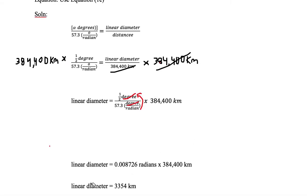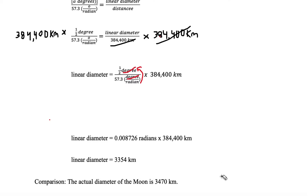Our final answer for the linear diameter is 3354 kilometers. Now let's compare that with the actual diameter of the Moon measured by a different technique, which is 3470 kilometers.